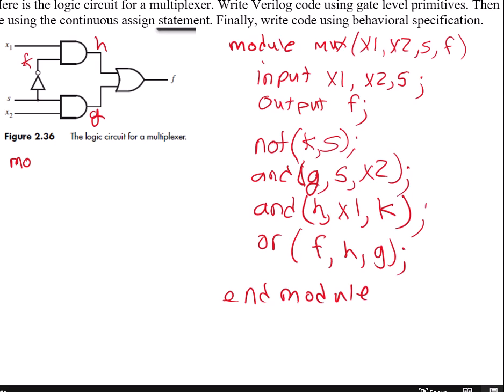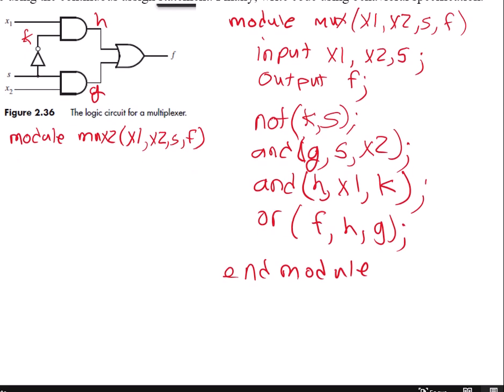But so this one is using the continuous assigned statement. And so this will be module. And you give it a name. I'll call it MUX2. And it still has X1, X2, S, and F. So now our input is X1, X2, and S.